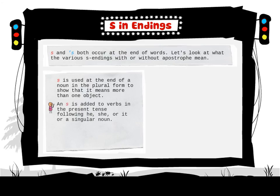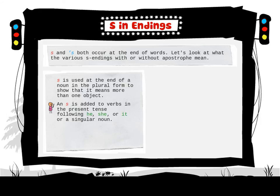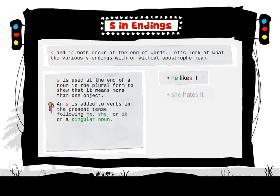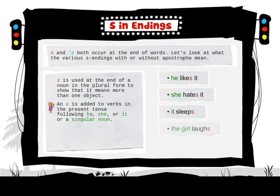An S is added to verbs in the present tense following he, she, or it, or a singular noun. Examples: he likes it, she hates it, it sleeps, the girl laughs, the bicycle rolls.